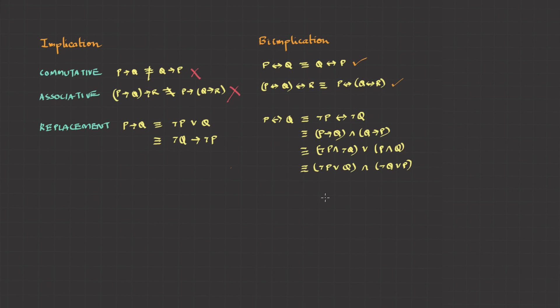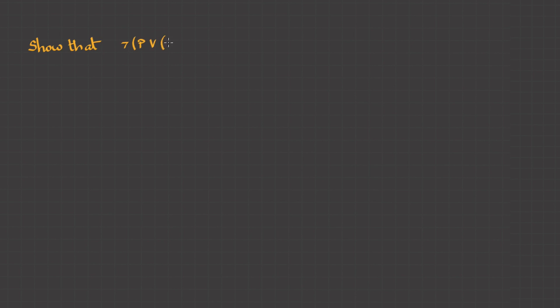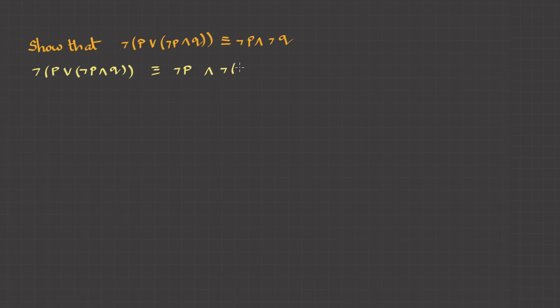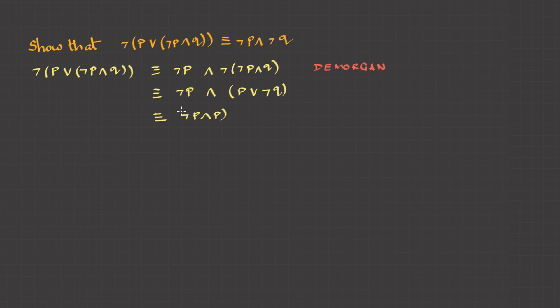That's all — these are the most important ones; apart from this there are many others but we can derive them whenever required. Let's take an example: show that negation of (P OR (negation P AND Q)) is equivalent to negation P AND negation Q. Negation of (P OR (negation P AND Q)) can be written as negation P AND negation of (negation P AND Q) using De Morgan's law. That's equivalent to negation P AND (P OR negation Q) using distributive law — which gives false OR (negation P AND negation Q), therefore it's negation P AND negation Q.